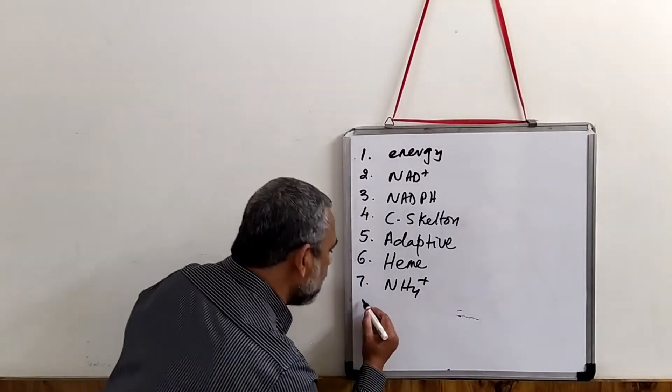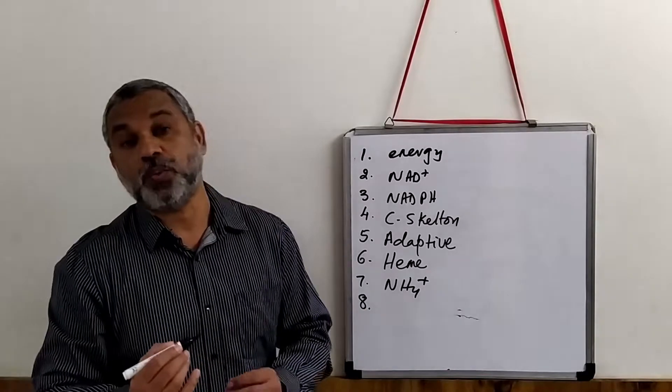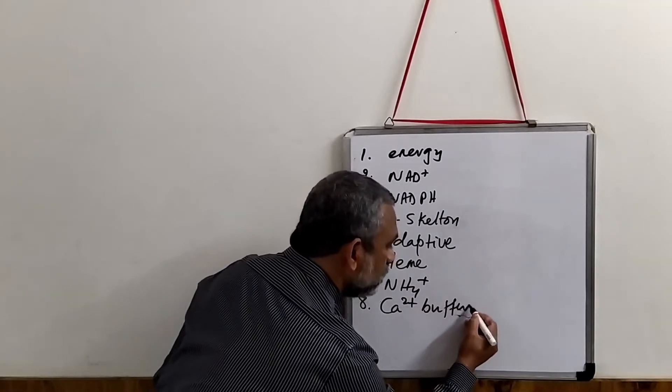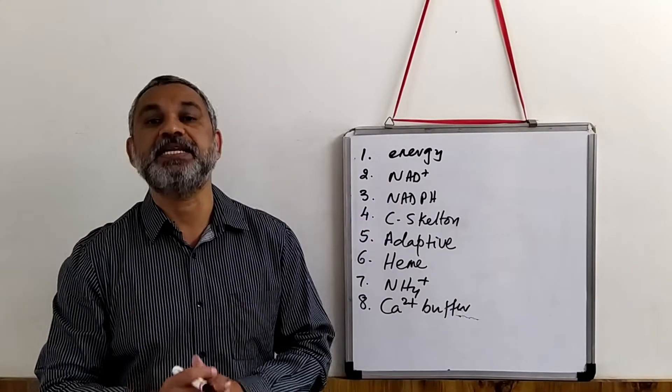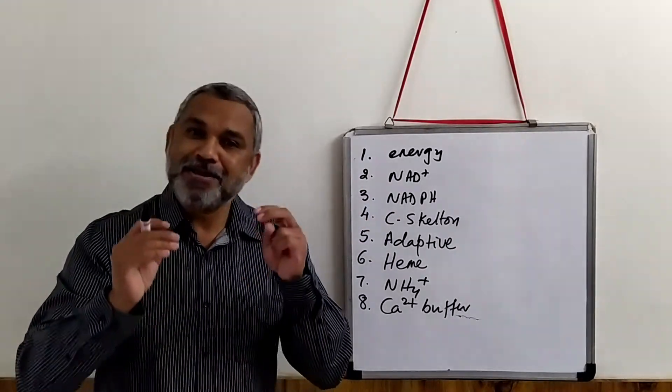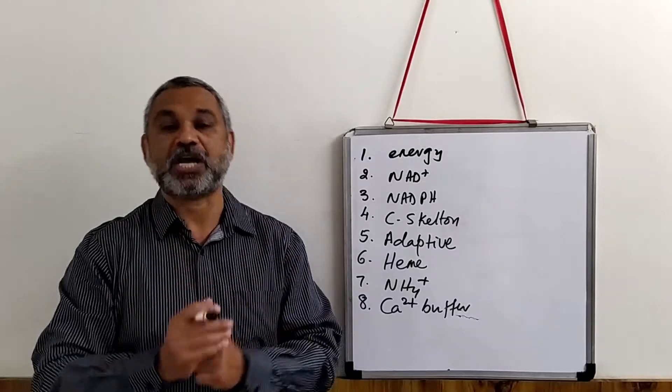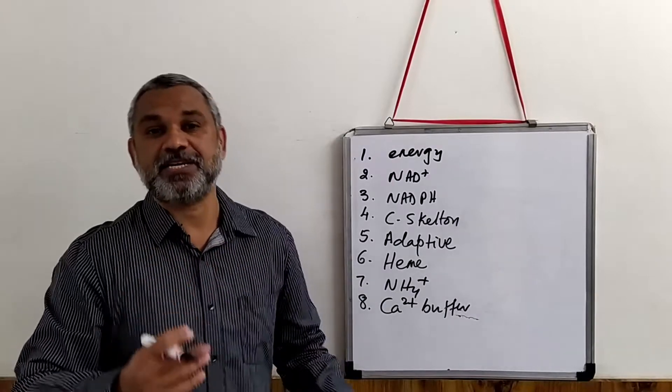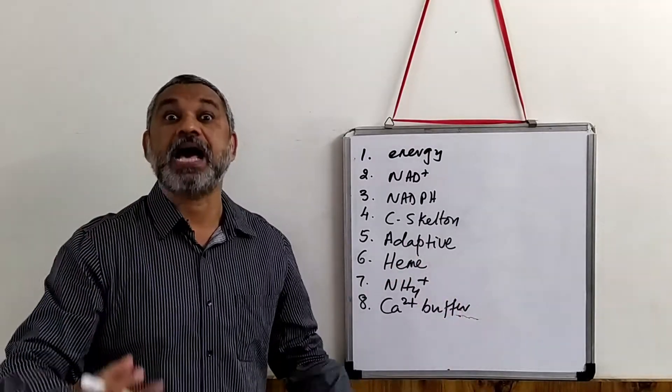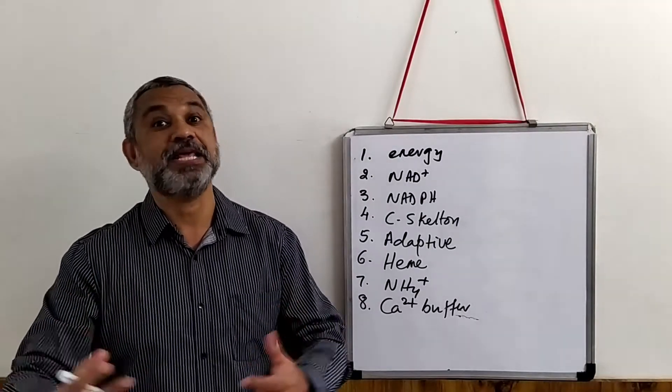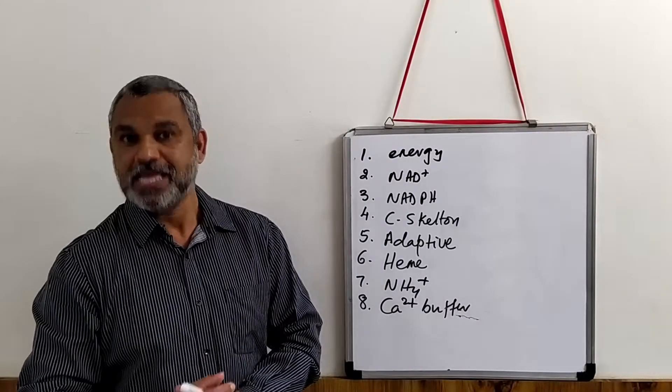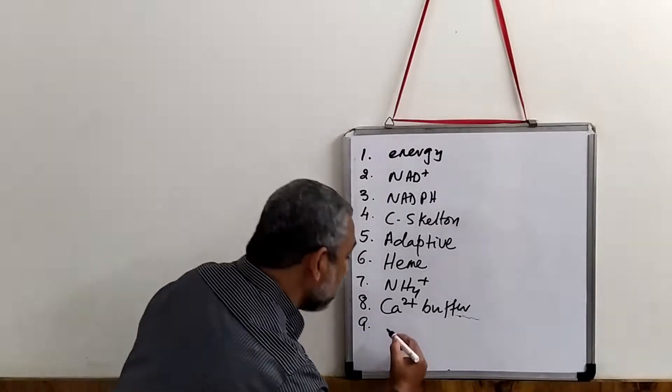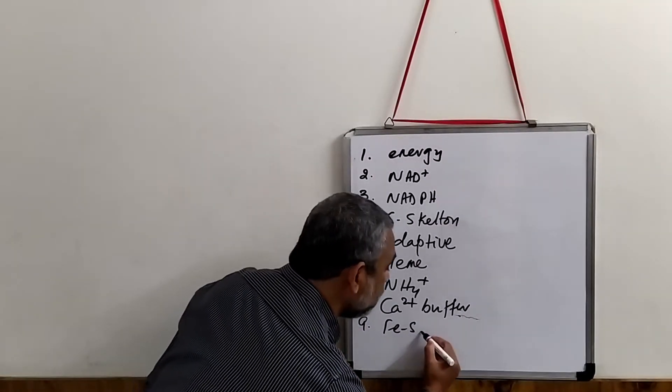Another important function of mitochondria is to maintain the calcium buffer. We are aware that calcium is present in the calcisomes and in the endoplasmic reticulum or the sarcoplasmic reticulum. And this buffering is assisted by mitochondria, which has a role in maintaining the level of calcium.